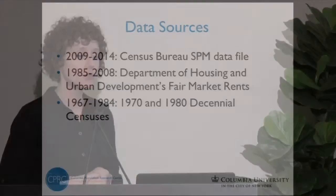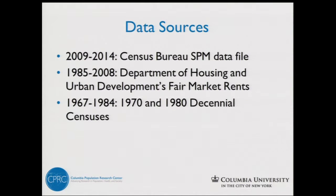The data sources we decided to use for this adjustment — remember we have to go all the way back to 1967 — basically the decision we made was to use the best data we have in each year. The best data in the most recent years are from the SPM research file, so we're using the geographical adjustments that the Census put together. Starting in 2008 we don't have those anymore, so we start using HUD's Fair Market Rents. We are very sensitive to the litany of limitations to the FMRs, but we're using them because we have that information in every year. Then starting in 1984 when we no longer have the FMRs, we're using the decennial census — the 1970 and 1980 decennial census — and linearly imputing between the two.